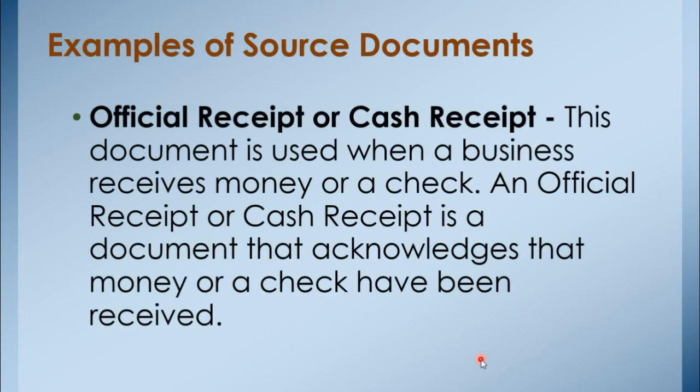It is explained in the first step of transaction analysis to identify transactions from source documents. Some of these documents are the official receipt or cash receipt. If you've paid for a product or service, you will receive an official receipt. In this document you can easily identify the items purchased, the quantity, the cost or amount paid, and the date of transaction. It is imperative to secure this document for the reliability and validity of information.